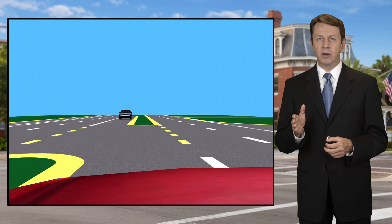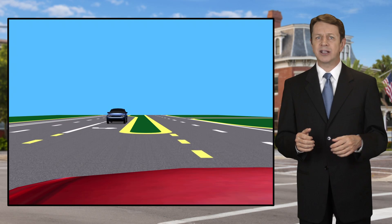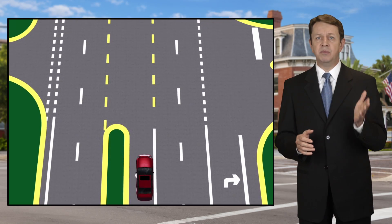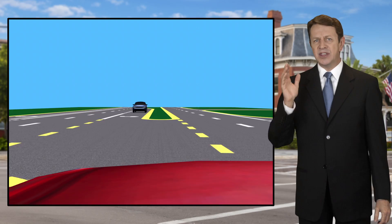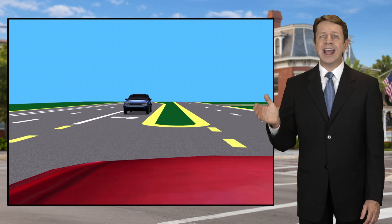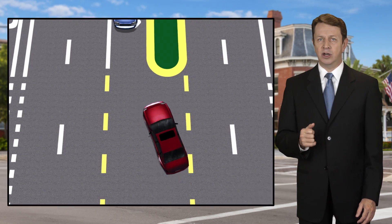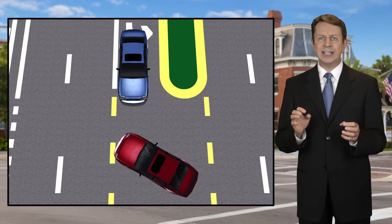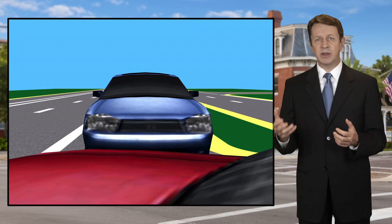A red car is northbound and wants to turn left to head west into a Starbucks parking lot. The red car pulls into the middle turning area waiting for traffic to clear. At the same time, a southbound blue car enters the same median area to make a left turn. As the two cars are in the median, they are obstructing each other's view of oncoming traffic to some extent.